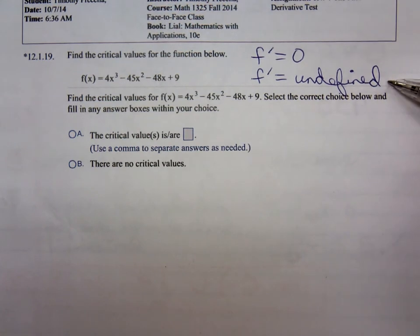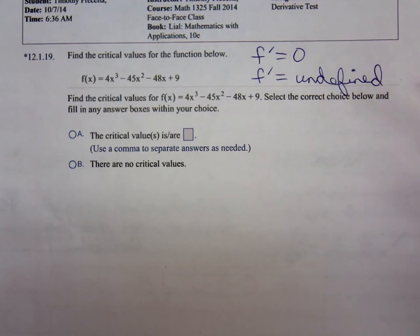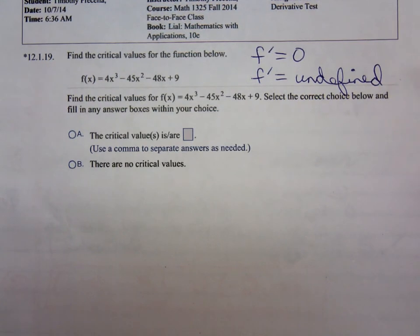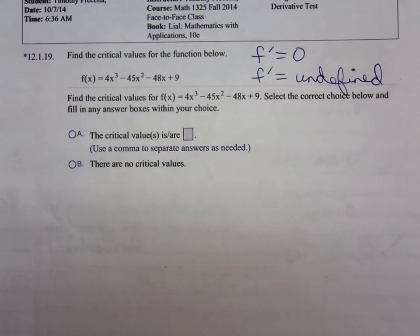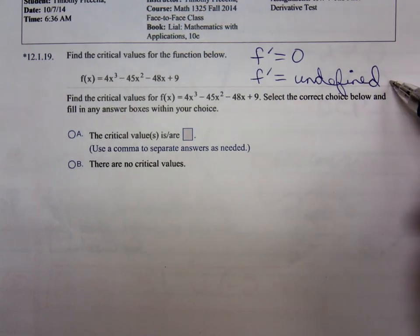This situation here where f prime is undefined, that primarily occurs with the functions that have variables in denominators and square roots. You want to avoid imaginary numbers. So if your function doesn't have a square root, if it doesn't have a variable in a denominator, then that situation there shouldn't happen in most situations.